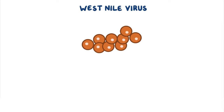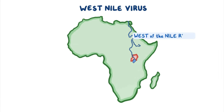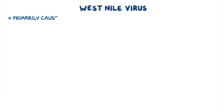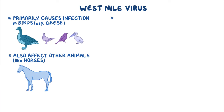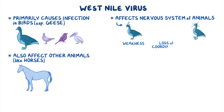The West Nile virus gets its name from where it was discovered — west of the Nile River in Uganda. It primarily causes infection in birds, especially geese and a range of wild birds, although it can also infect other animals like horses. The virus affects the nervous system of the animals, causing symptoms that range from weakness and loss of coordination to complete paralysis.